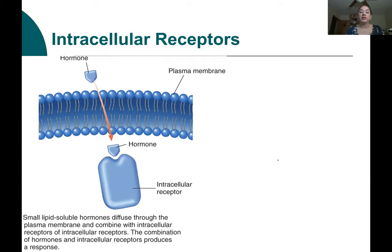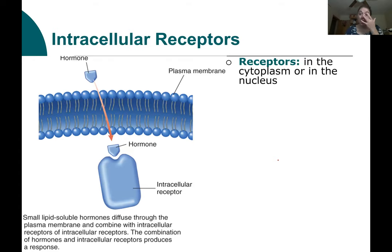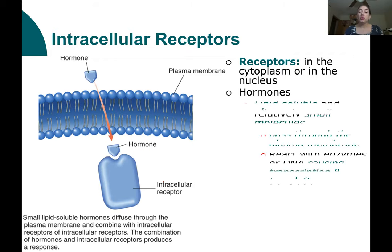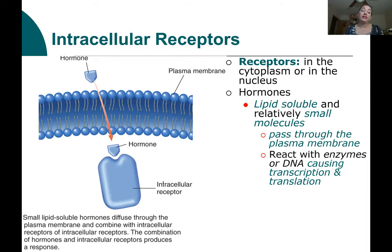Now, intracellular receptors — these are receptors that are inside the plasma membrane, either in the cytoplasm or inside the nucleus itself. These hormones are able to pass freely through the plasma membrane, so they're usually lipid soluble and small in size.